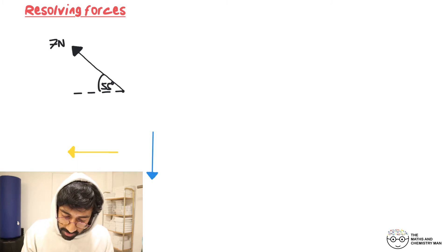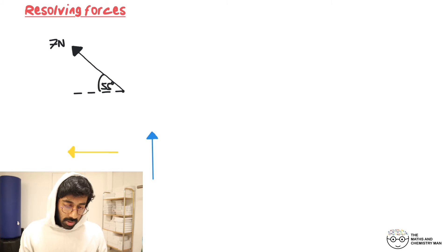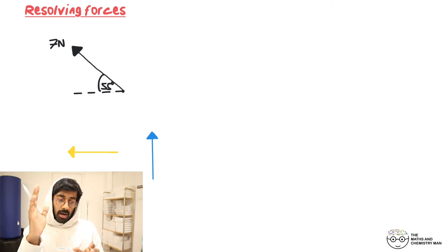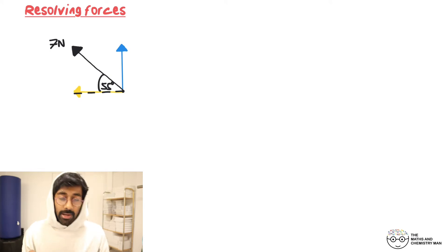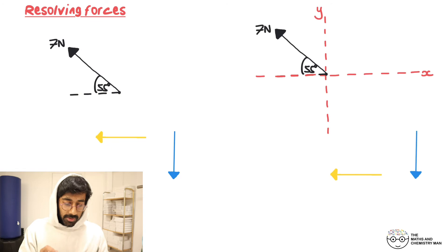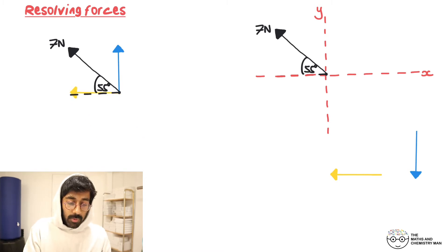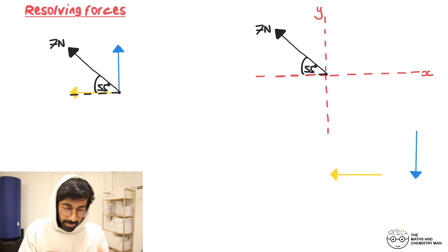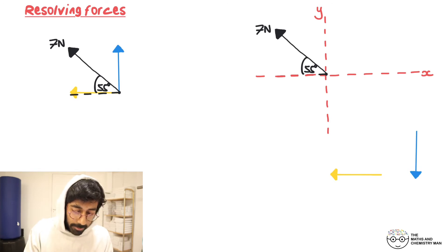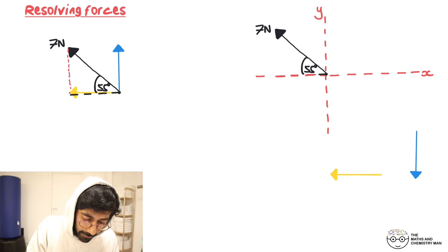Let's look at another example. We flip the blue arrow — now we're moving in a northwesterly direction. We break it into how much upwards and how much to the left this time. Here's the blue arrow upwards and the yellow arrow to the left. The yellow and blue together make the black one — that's our vector triangle.